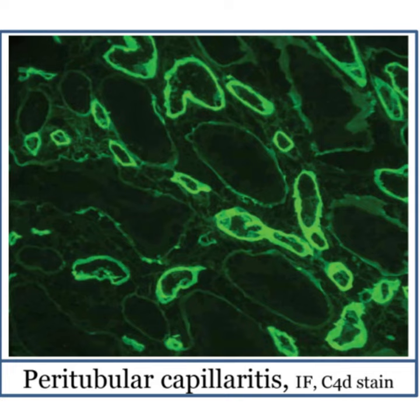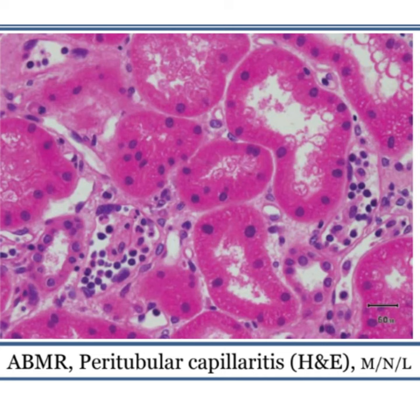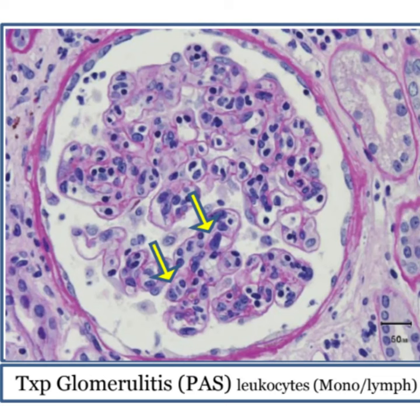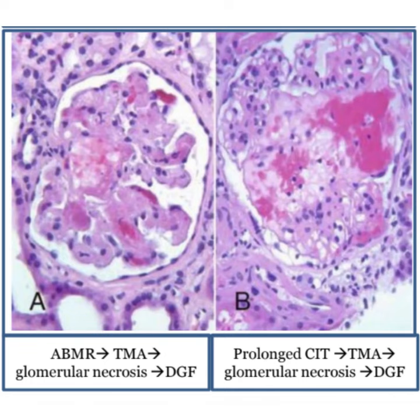Let's train our eyes with some pathology. All these images are present in my pocketbook, Transplant Bullets: Straight to Your Brain. Here you can see the linear C4D staining of the peritubular capillaries by immunofluorescence. Another image shows peritubular capillaries by hematoxylin and eosin where you can see monocytes, lymphocytes, and neutrophils. This image shows evidence of glomerulitis by the periodic acid Schiff stain.